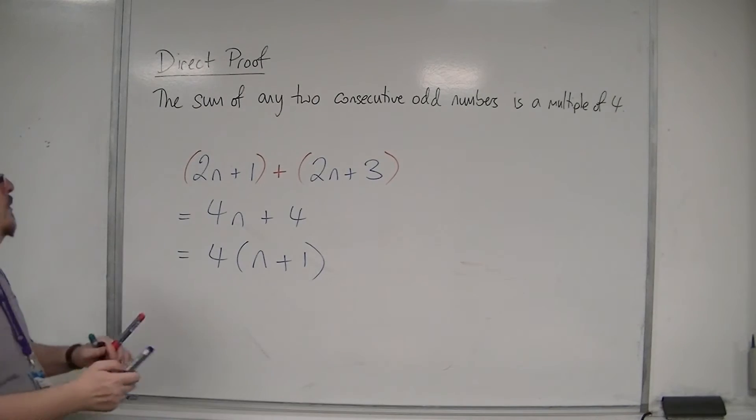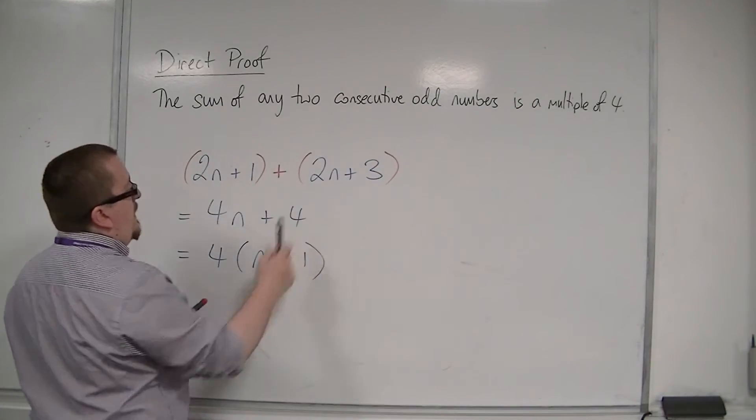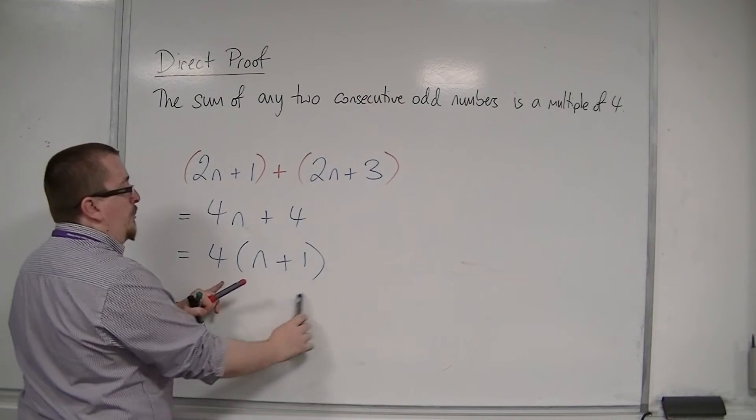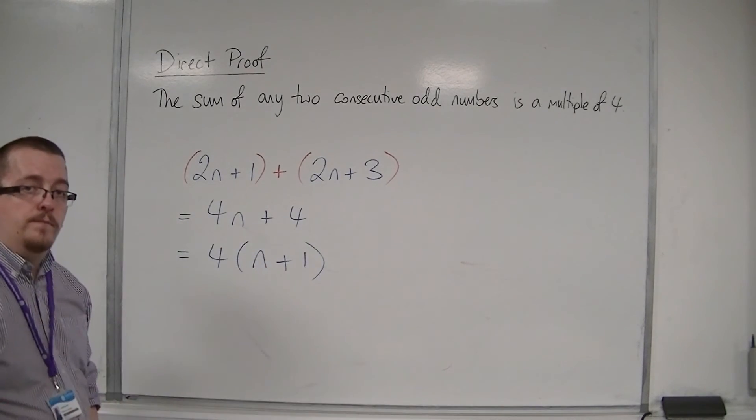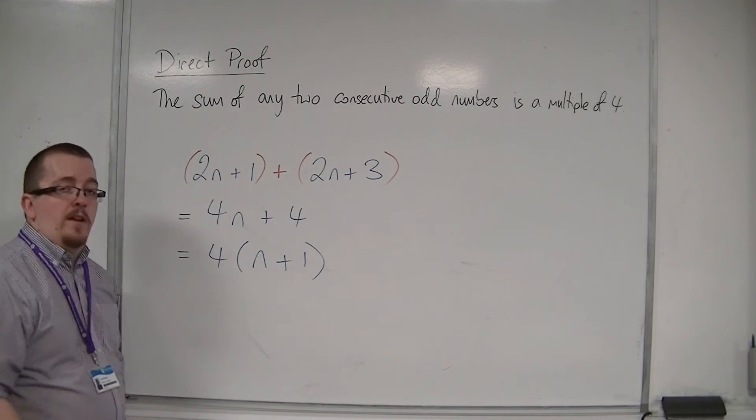And so we can show that the sum of two consecutive odd numbers is a multiple of 4, because we've shown that it has a factor of 4. And that's how you can construct this logical argument, but this time algebraically.